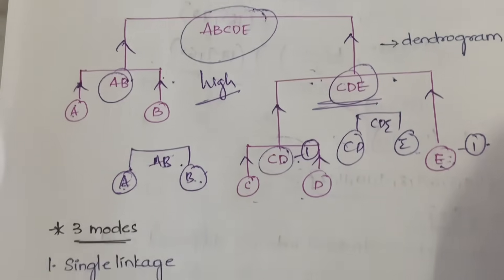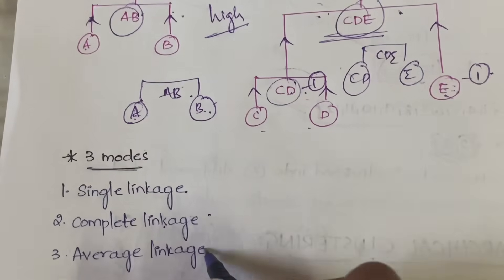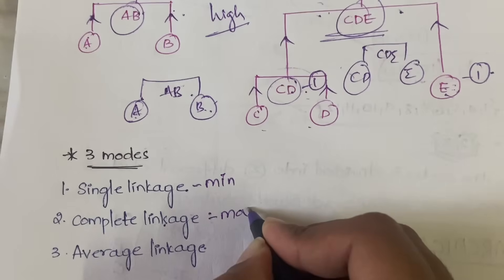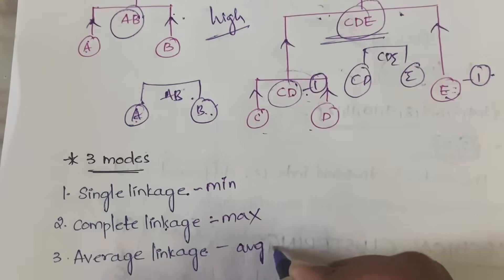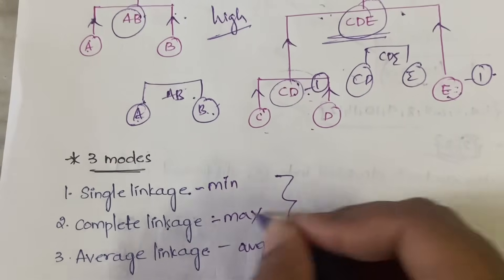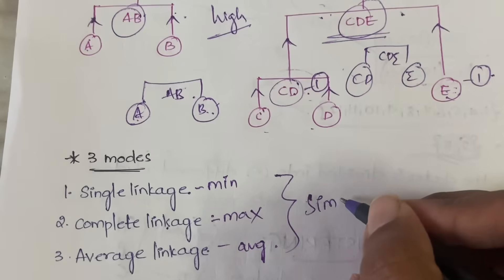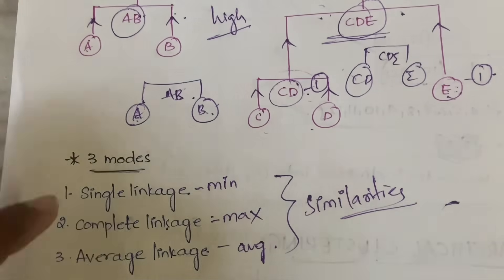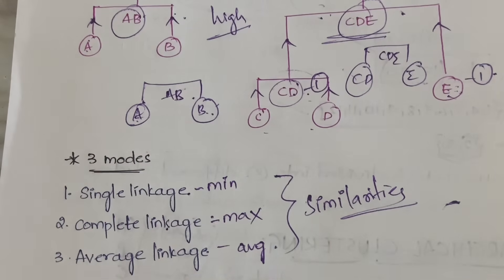In agglomerative clustering, we also have three linkage modes: single linkage, complete linkage, and average linkage. Single linkage means minimum — you select the minimum similarity between clusters. Complete linkage means maximum — you go for maximum similarity. Average linkage means you use the average similarity. So you can operate the agglomerative method in these three modes.